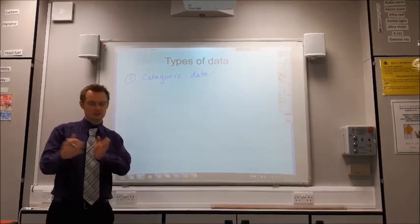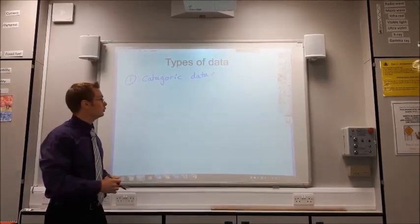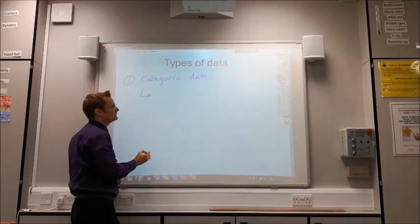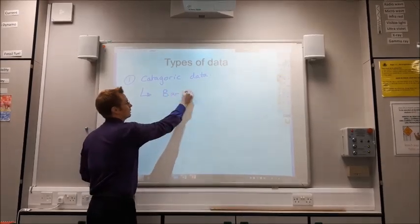So, we can't have blue 0.5. It's got to be blue, red, white, black. So, we call it categoric data. If you have categoric data, you always draw a bar graph.